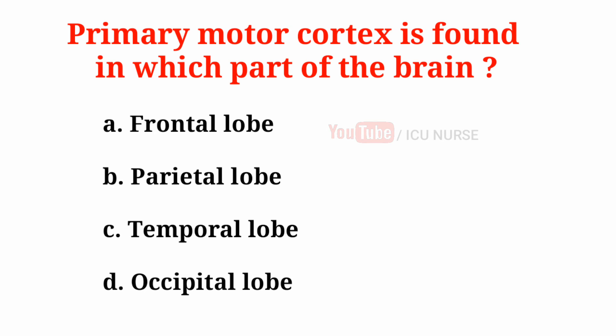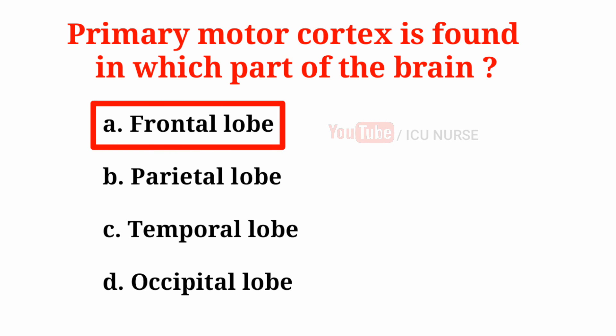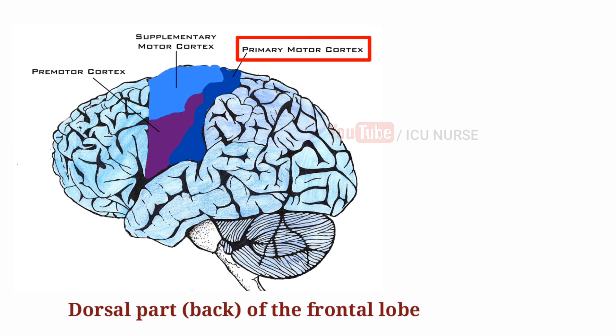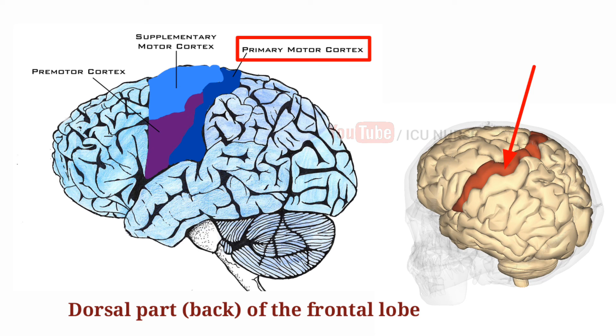The primary motor cortex is found in which part of the brain? A. Frontal lobe, B. Parietal lobe, C. Temporal lobe, D. Occipital lobe. The correct answer is A. Frontal lobe. The primary motor cortex (M1) is one of the principal brain areas involved in motor function and is located in the frontal lobe along a bump called the precentral gyrus.